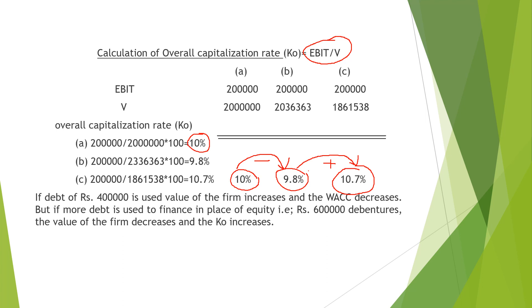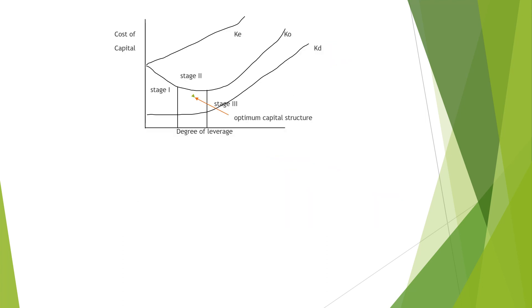There is no single approach here — we have a graph with three stages: Stage 1, Stage 2, and Stage 3. In the first stage, the overall cost of capital decreases as debt is introduced.